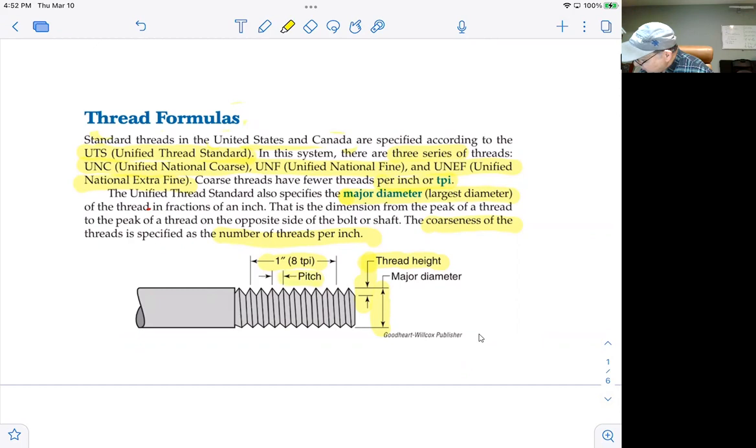The pitch is the distance between the peaks of two adjacent threads. It's also the distance between the depths of two adjacent threads, any two threads. It is uniform. And the threads per inch tells you how many, literally how many threads per inch there are. It's what it says it is.